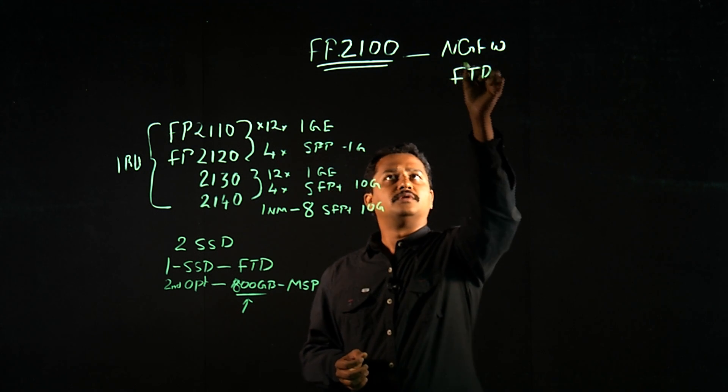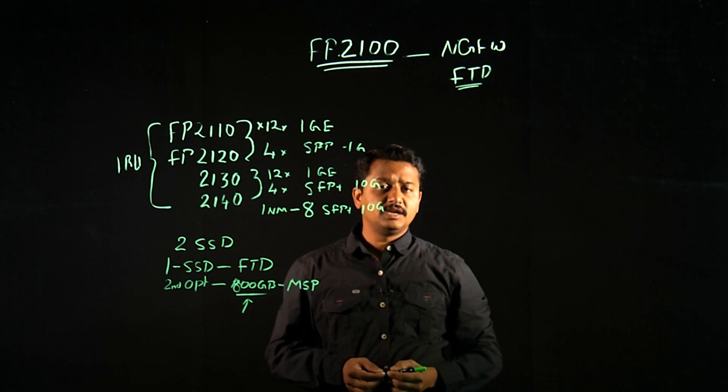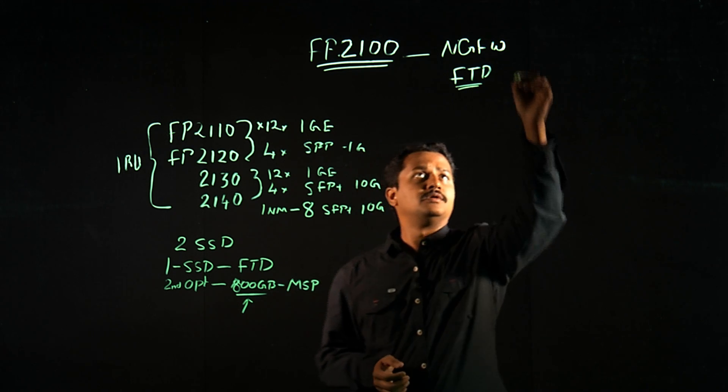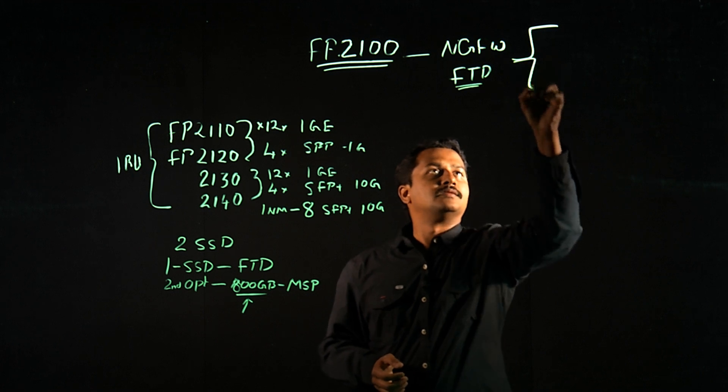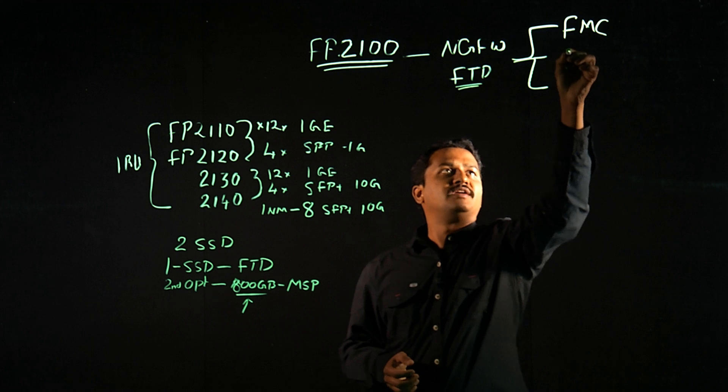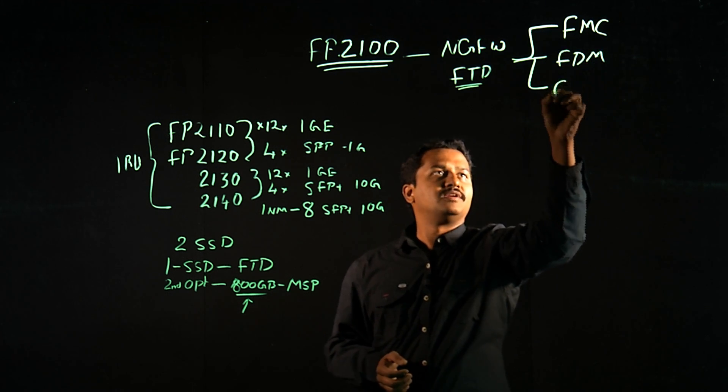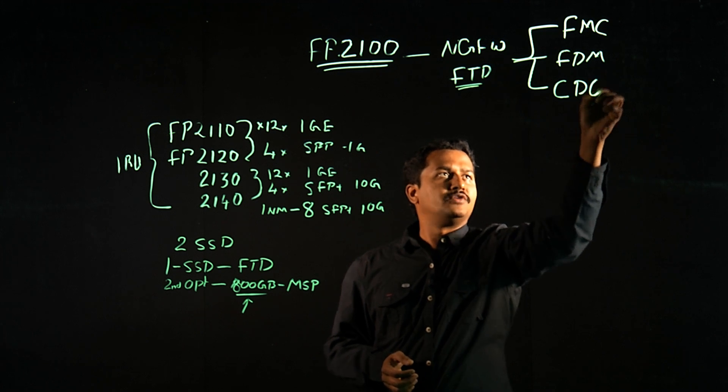This Firepower 2100 series platform with FTD can be managed with three different management software. First is FMC, which is Firepower Management Center. Second, we have Firepower Device Manager, which is FDM. And third, we have CDO, Cisco Defense Orchestrator.